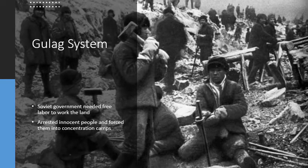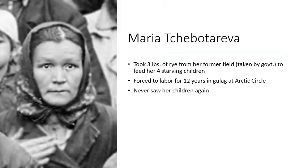For those who dared question the Communist Party, the Soviet Union had what was known as the gulag system — basically a prison camp system. The Soviet government needed free labor to work the land. If you were deemed an enemy of the state, they could send you to Siberia. There are stories of people like Maria Chetbotaria, who took three pounds of rye from her former field — which had been taken by the government — to feed her four starving children. She was arrested for that and forced to labor in Siberia for 12 years in the gulag, in the Arctic Circle. She never saw her children again.